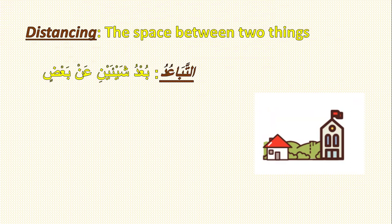The last type is distance — the space between two things. An example is the relationship between the noon mushaddad from the nose and a letter from the throat.